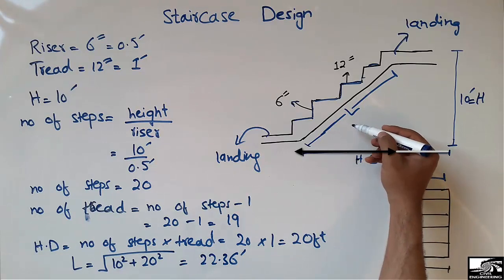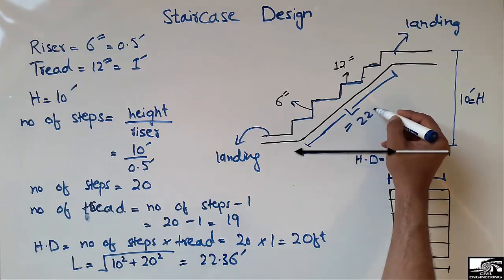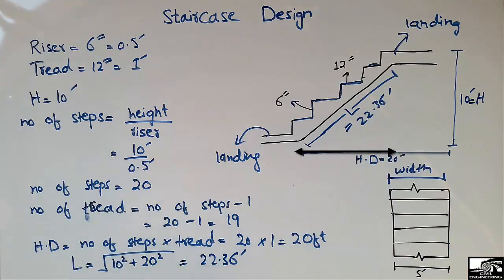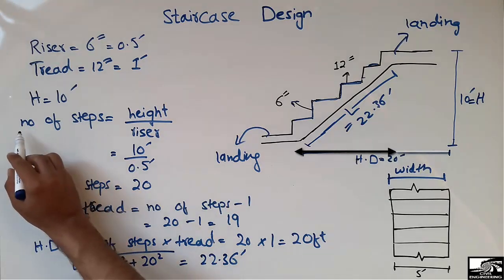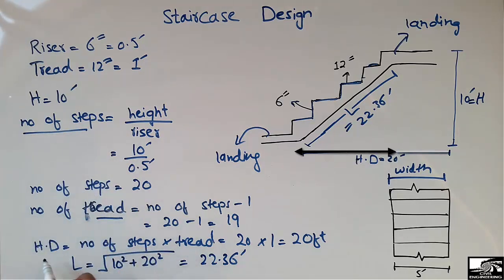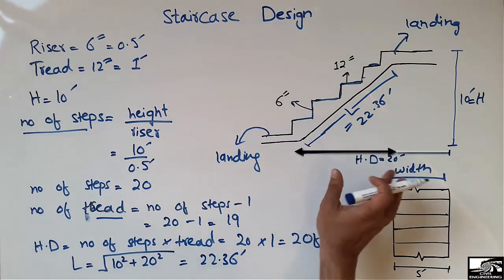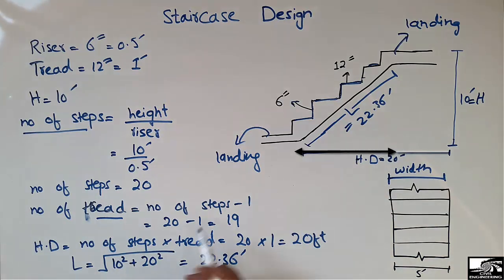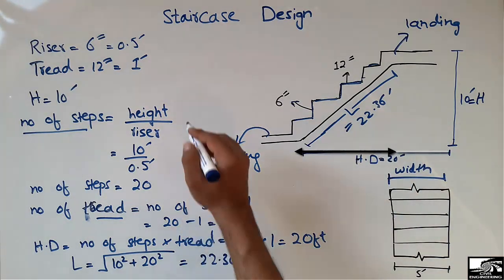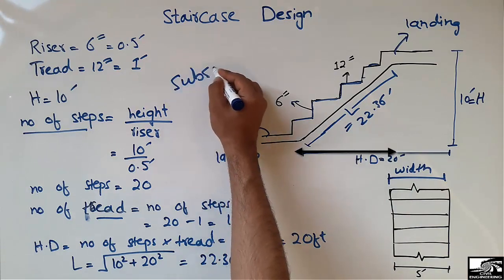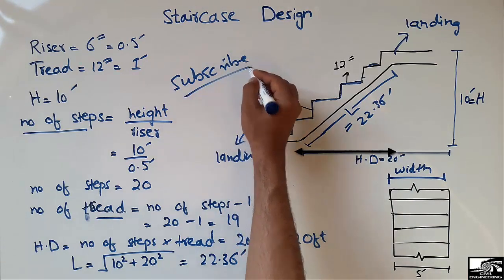So the total length of the staircase comes out to be 22.36 feet. This was all about staircase design — how to find the number of steps, the number of treads, the horizontal distance, and the total length of the staircase. Hope you guys understand. Don't forget to subscribe to my channel for daily civil engineering videos. Thank you for watching.